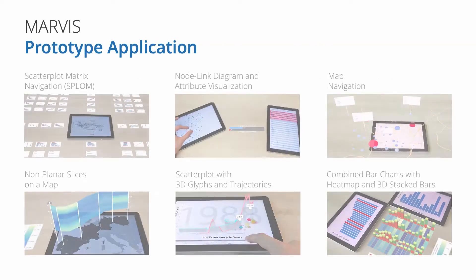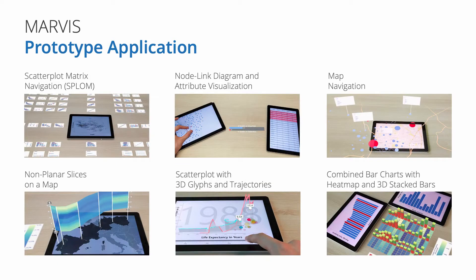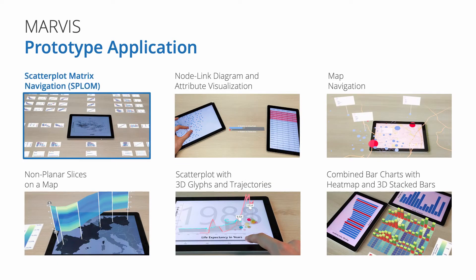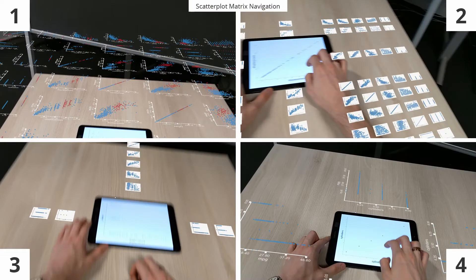A second core part of Marvis is our prototype application in which we implemented six different use cases. The goal behind the first example is to explore how AR can provide support for navigating within a scatterplot matrix. For that, we realized four different augmentation designs in which the tablet always shows one cell of the matrix.